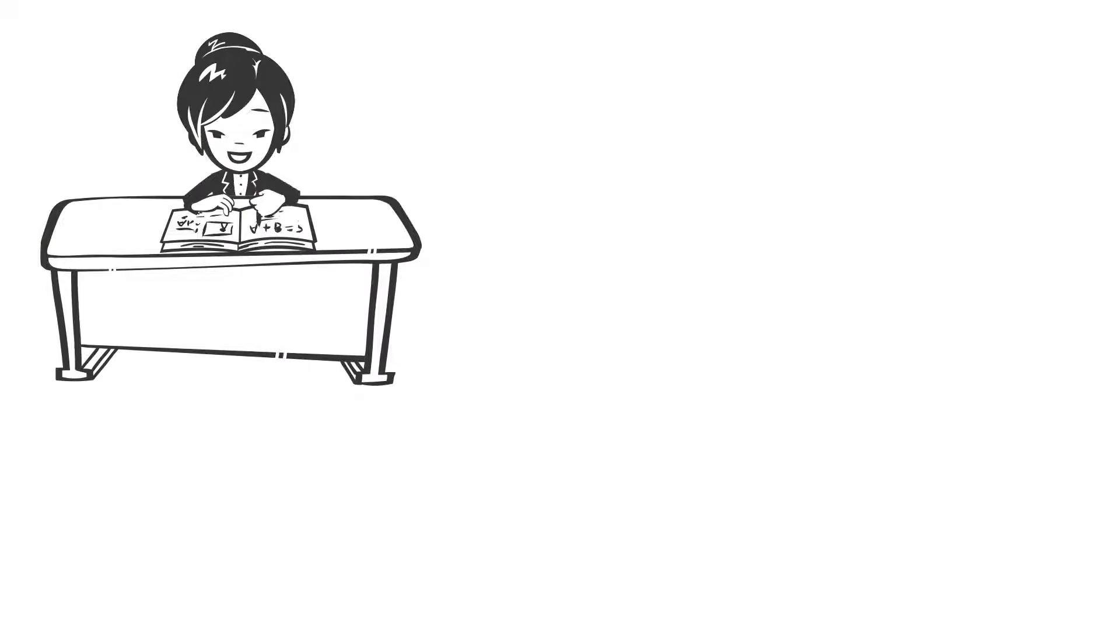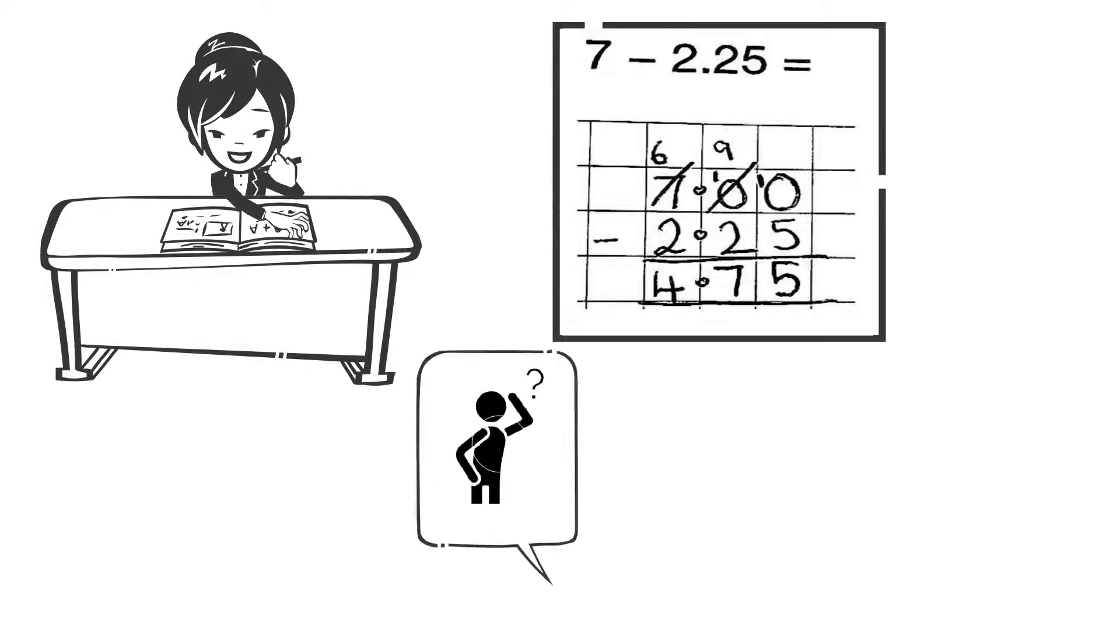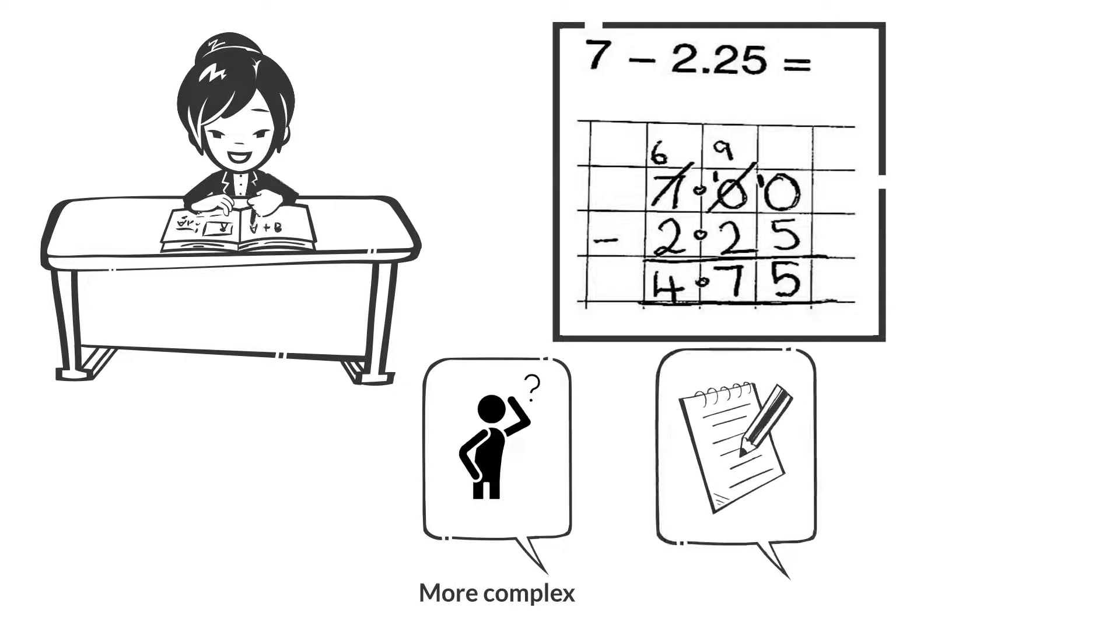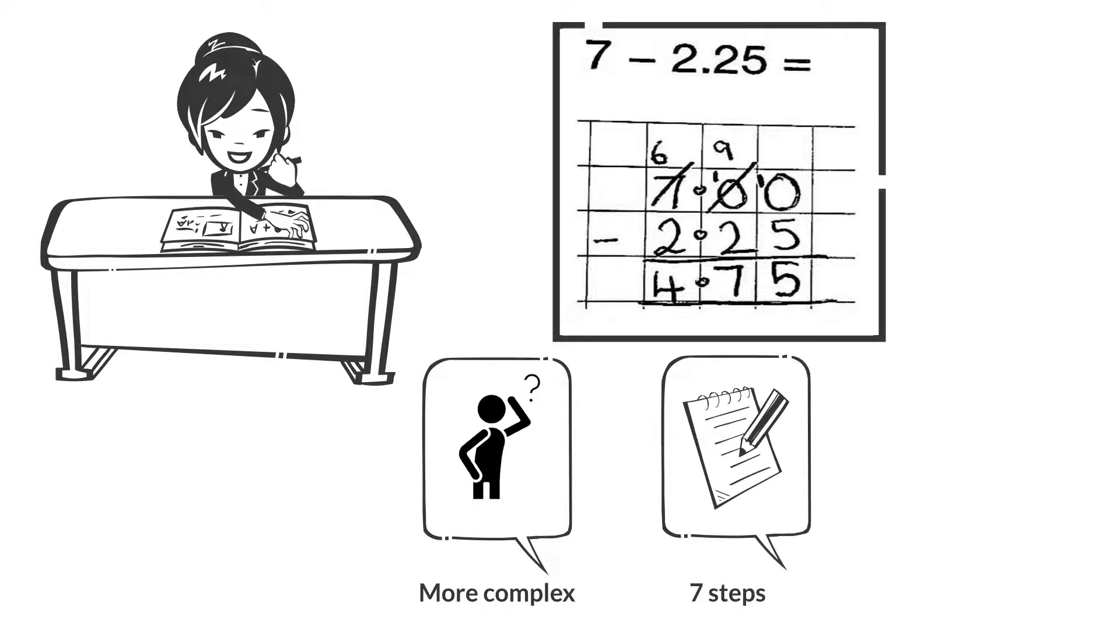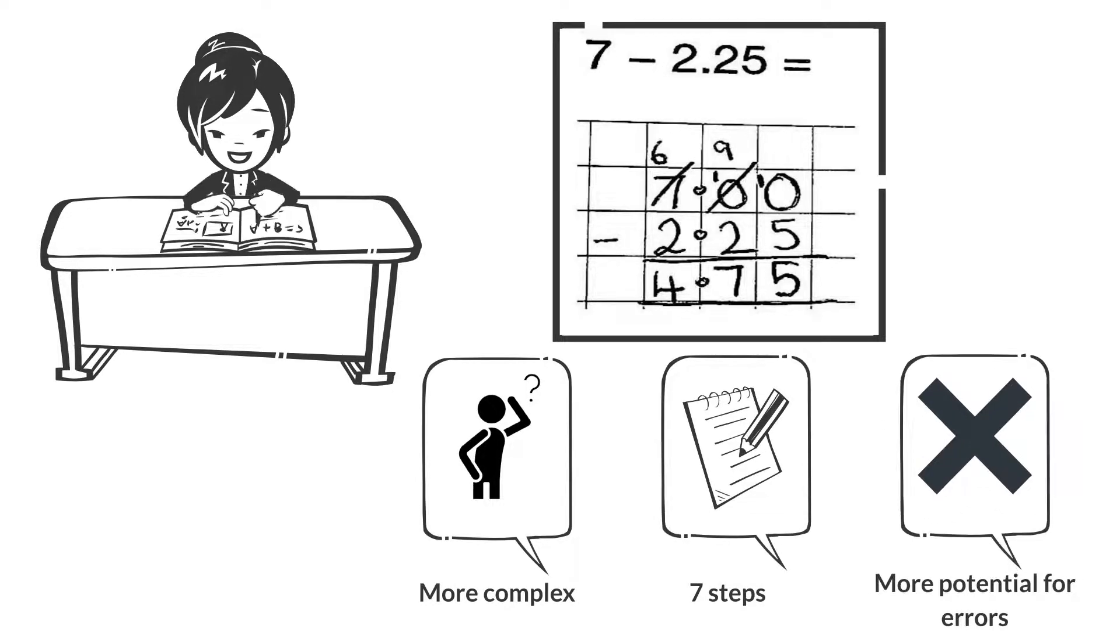A written strategy is not only inefficient, but it makes the question more complex, and it now requires seven steps, which increases the chances of errors being made.